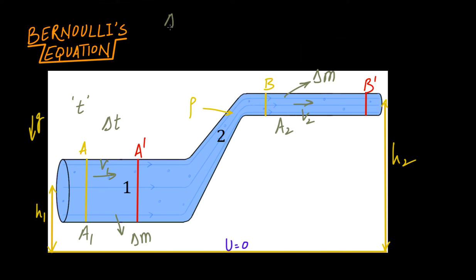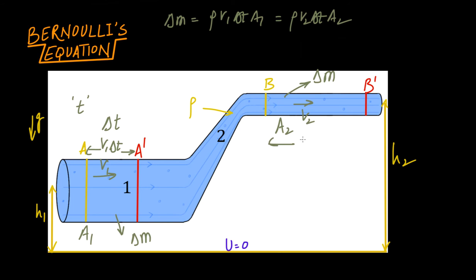To find delta m: the volume at section a1 gives delta m equal to rho v1 delta t times a1, since the distance travelled is v1 delta t. The mass in section B to B' is rho v2 delta t times a2. Since these masses are equal, rho and delta t cancel out, giving us a1 v1 equals a2 v2 — the equation of continuity. Let this be equation number one.